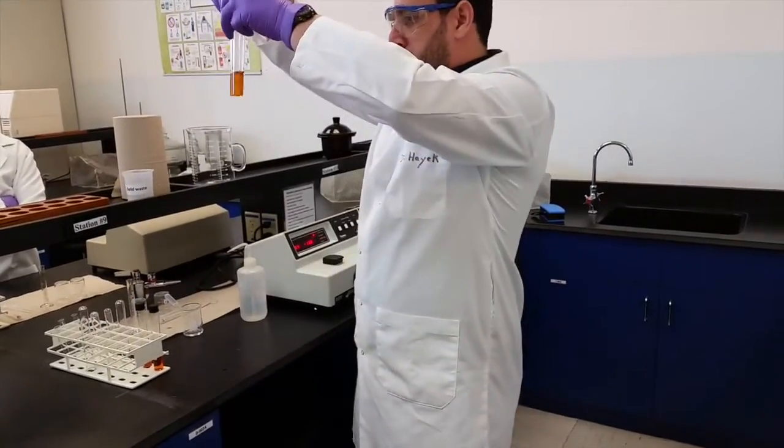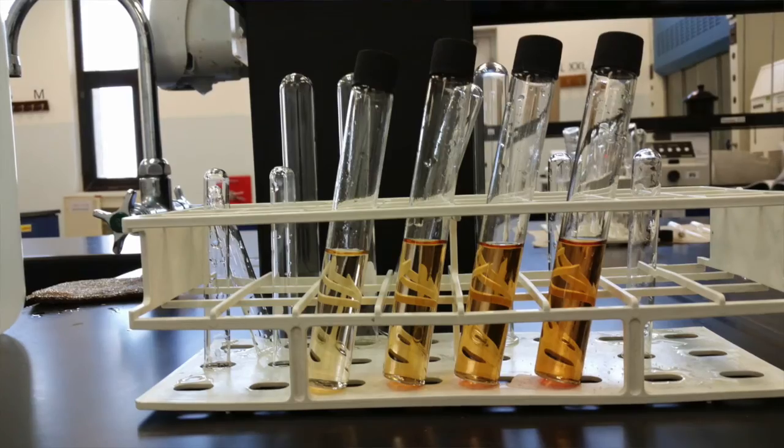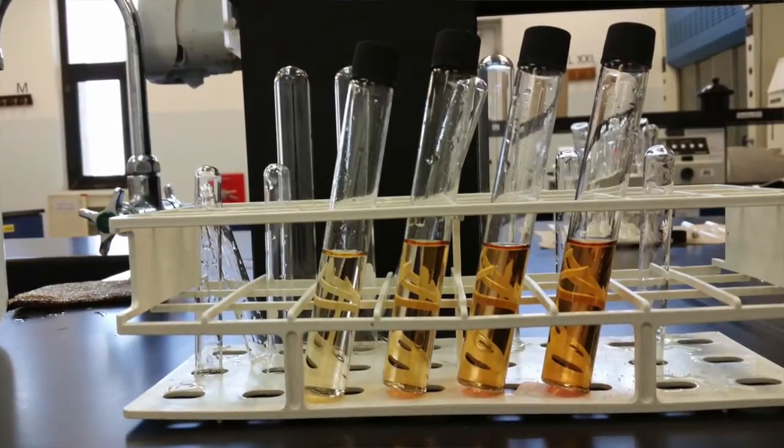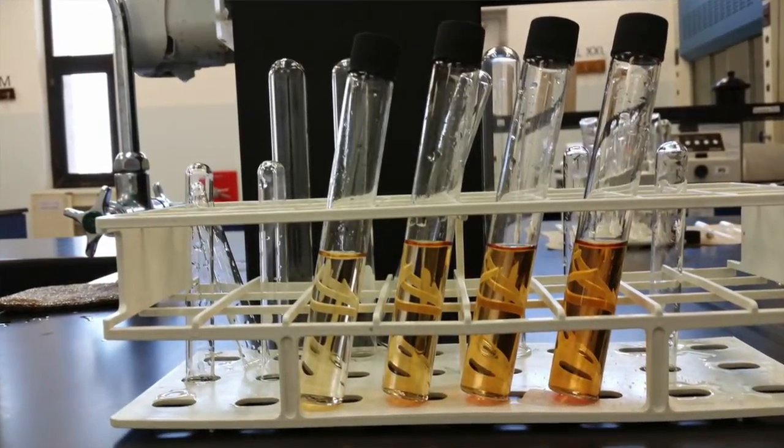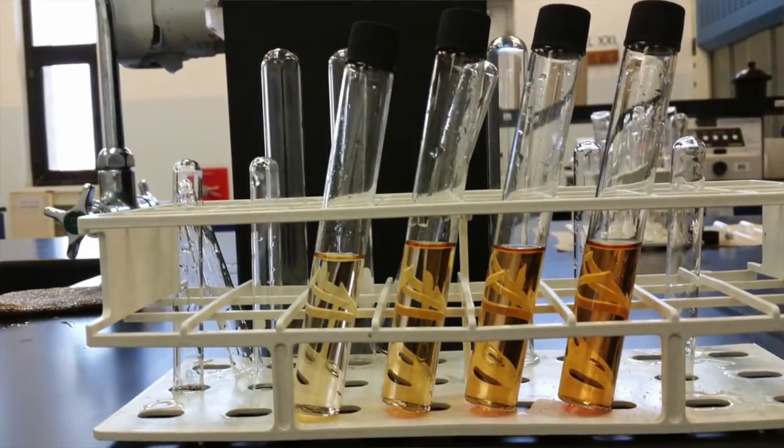We will fix the concentration of Fe3+ and we will be changing the concentration of SCN minus. You can see that the concentration, every time I increase the concentration, the tube or the color becomes darker.